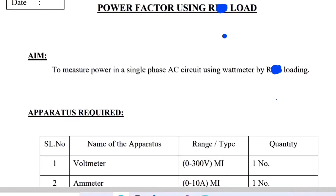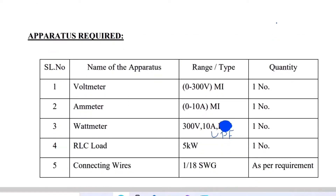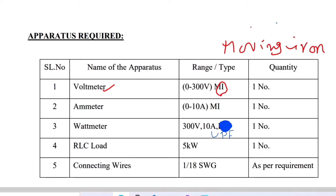For an AC circuit we need a wattmeter of MI type — moving iron type. Hopefully everybody knows that for AC measurement we need a moving iron meter, and for DC measurement we need a moving coil meter.